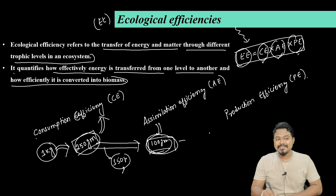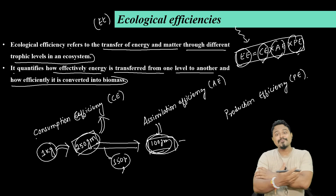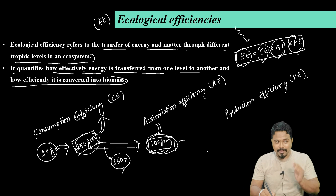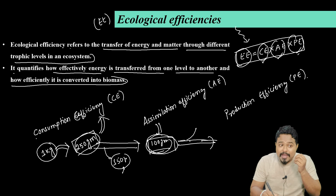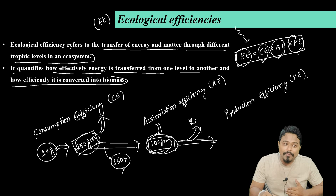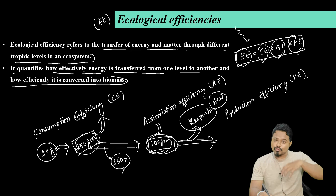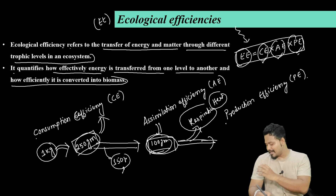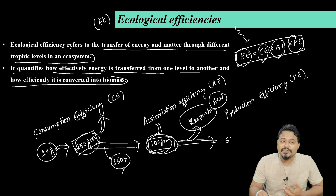Production efficiency refers to what the body does with the assimilated energy. From the assimilated amount, some is used for respiration and heat loss. The remaining maximum production goes into making new biomass — for example, building muscles. For example, 50 grams may go into making new muscles. So production efficiency is the proportion of assimilated energy converted into new biomass.